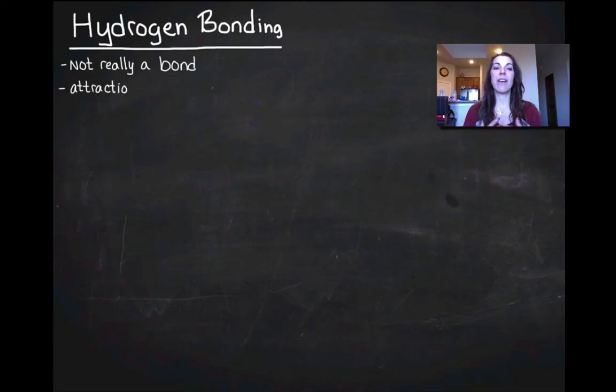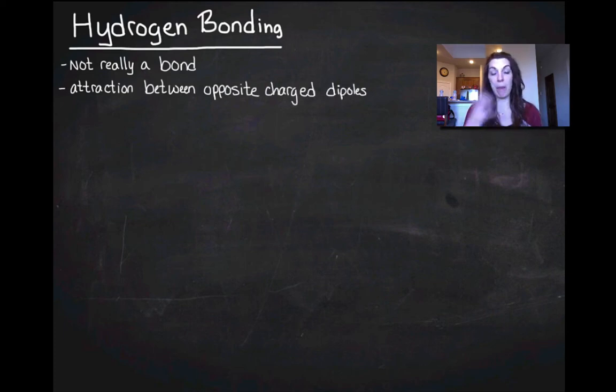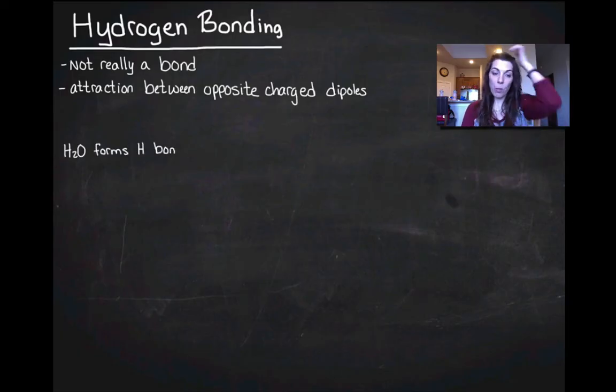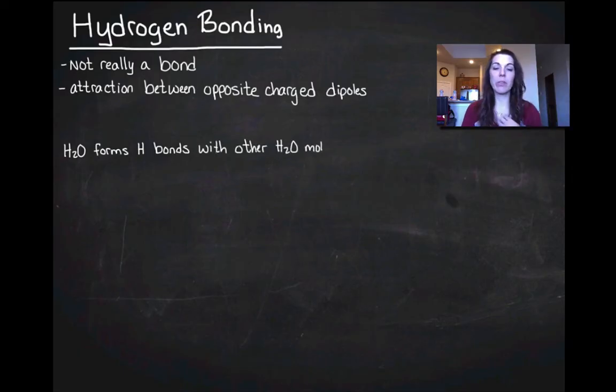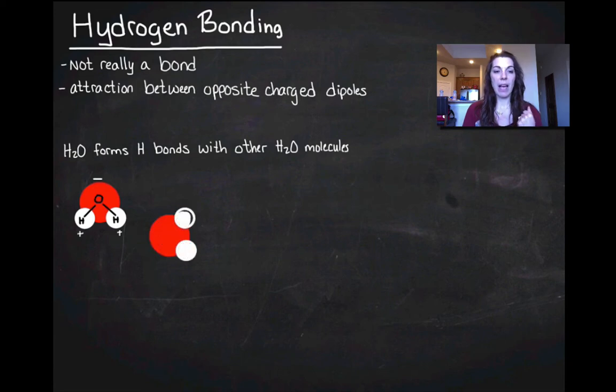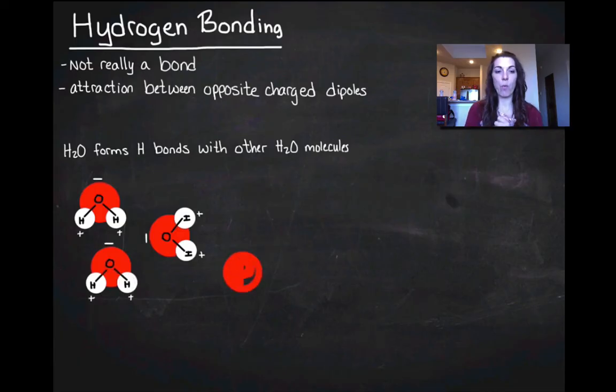Instead, what it is, is you have an attraction between the opposite charged dipoles on a molecule. So that positive side of the water molecule where the hydrogens were, and that negative side of the water molecule where the oxygens were, those are going to kind of think of it like a magnet. So you're going to get an attraction between opposite charges. So water is going to form hydrogen bonds with other water molecules. So there's my water molecule. And those black lines are my covalent bonds. And I'm going to go ahead and label my charges and put a bunch of water molecules down there.